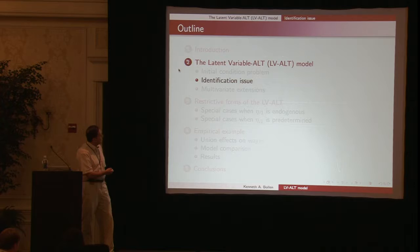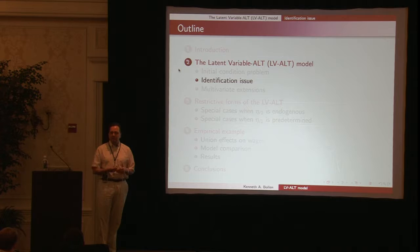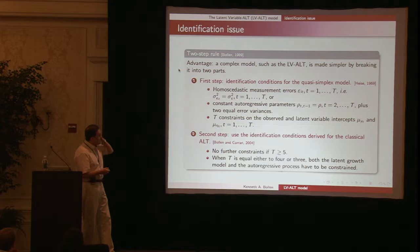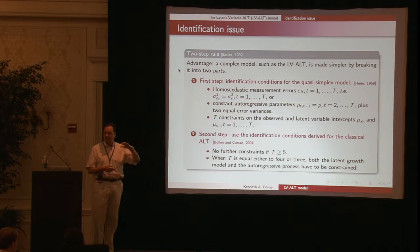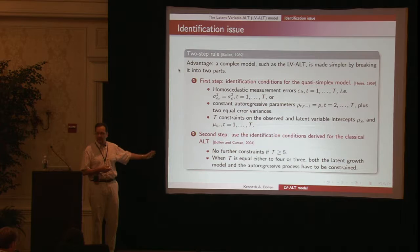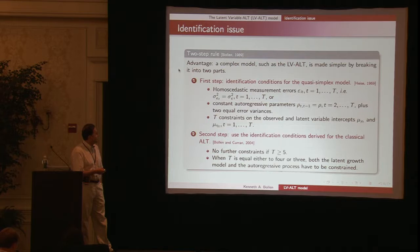Identification issue. This is whether it's even possible to find parameter estimates. For complicated models like this with latent variables, multiple indicators, and longitudinal structure, there aren't off-the-shelf simple ways of identifying these models that are general, necessary, and sufficient conditions. However, there is a sufficient condition outlined on this slide that you could use. We can impose some restrictions that aren't too bad to identify the model.